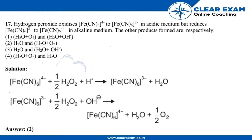The question is: hydrogen peroxide oxidizes ferrocyanide to ferricyanide in acidic medium, but reduces ferricyanide to ferrocyanide in alkaline medium. So what are the other products that are formed respectively?